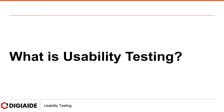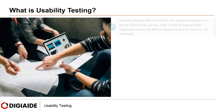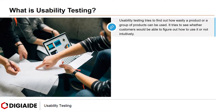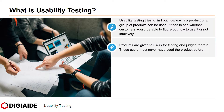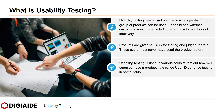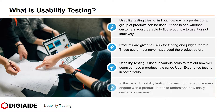Let's start with what is usability testing? Usability testing tries to find out how easily a product or a group of products can be used. It tries to see whether customers would be able to figure out how to use it or not intuitively. Products are given to users for testing and judged therein. These users may never have used the product before. Usability testing is used in various fields and is also called user experience testing in some fields. It focuses upon how consumers engage with a product and tries to understand how easily customers can use it.